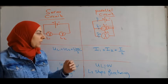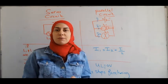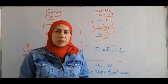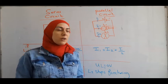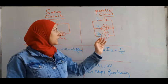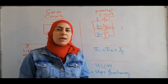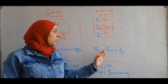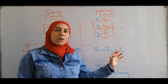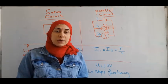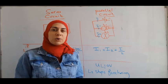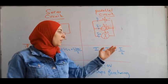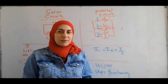In a parallel circuit with lamps L1 and L2, the voltage across each lamp is the same. Moreover, if the lamps are identical, the current through each is equal: I1 equals I2 equals the main current divided by 2. If you have three identical lamps in parallel, you divide the main current by three.